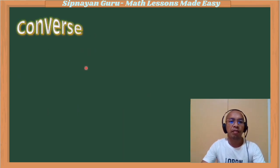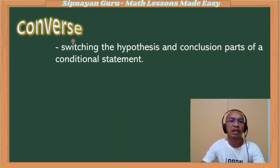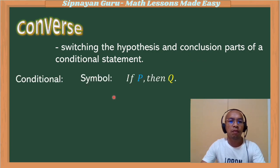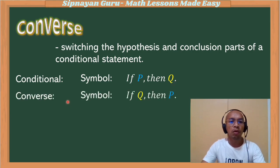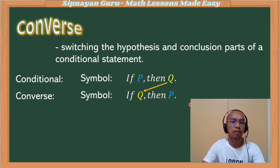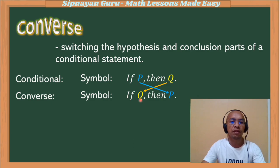What is a converse of a statement? The converse of an if-then statement or conditional statement is done by switching the hypothesis and the conclusion. So in a conditional statement, the symbol is if P then Q — if hypothesis, then conclusion. Our converse would be: if conclusion, then hypothesis. We are just switching the hypothesis to be the conclusion and the conclusion to be the hypothesis.